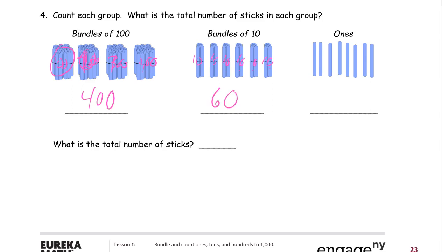And ones we just count one at a time. 1, 2, 3, 4, 5, 6, 7, 8. Now the total number of sticks, 400, 60, and 8. If we add those all together, we have 468 total number of sticks.